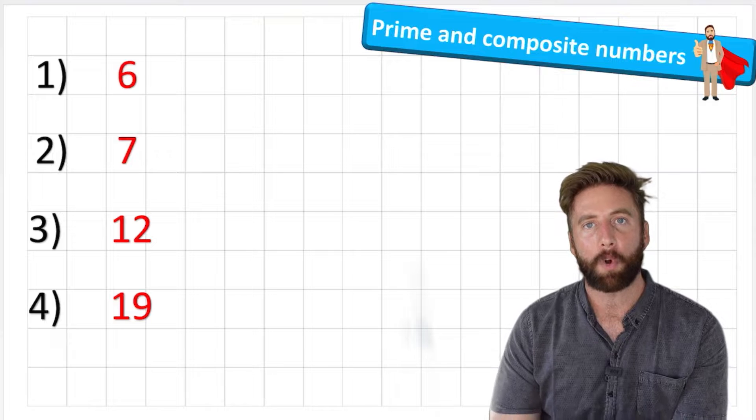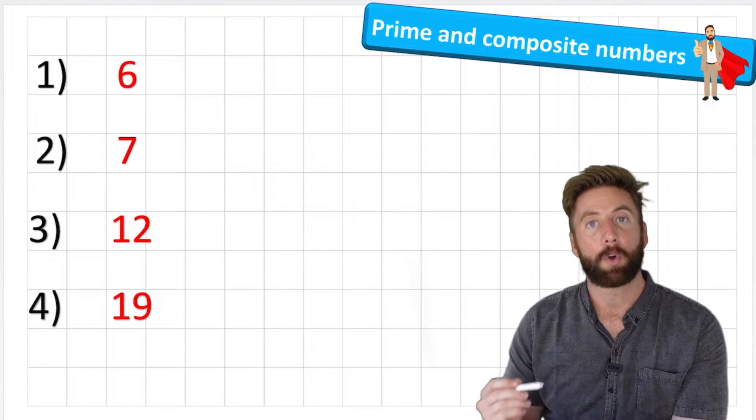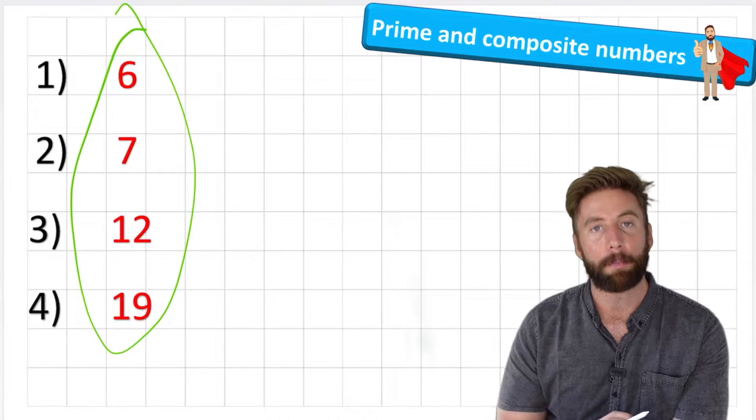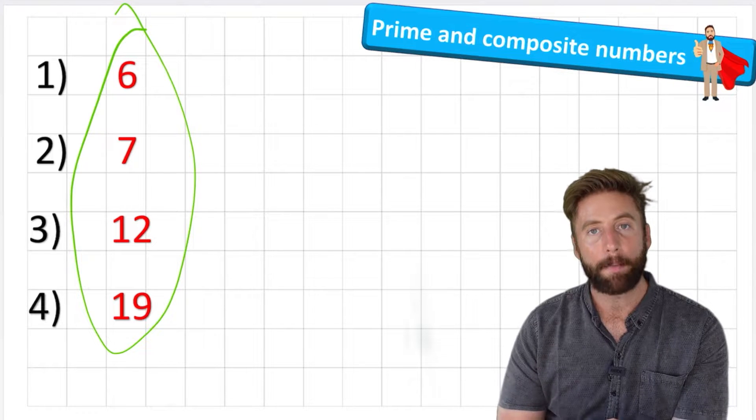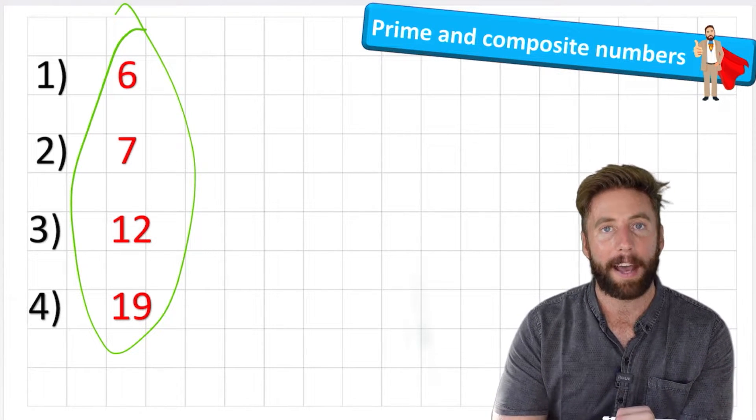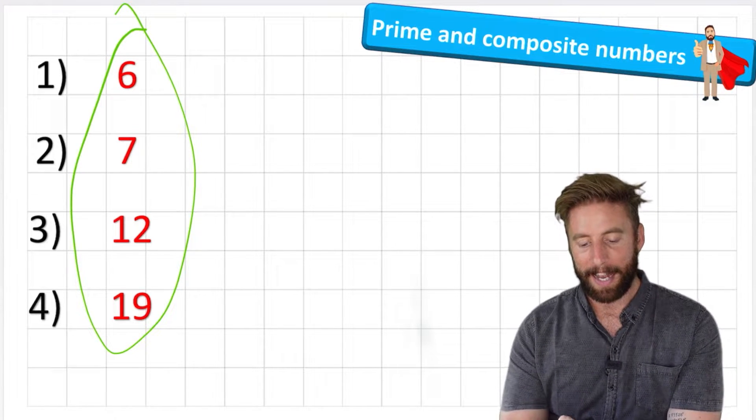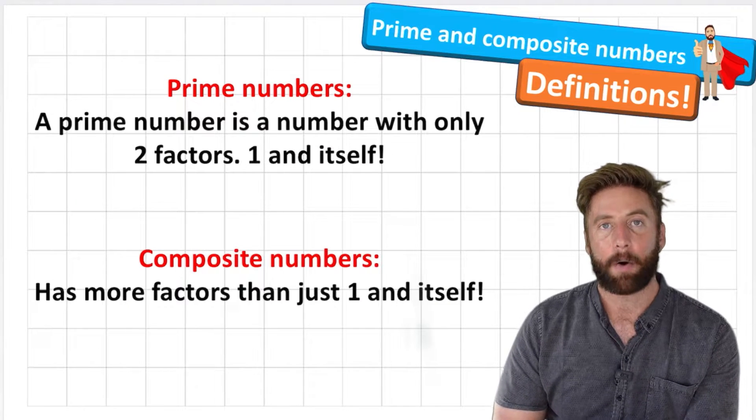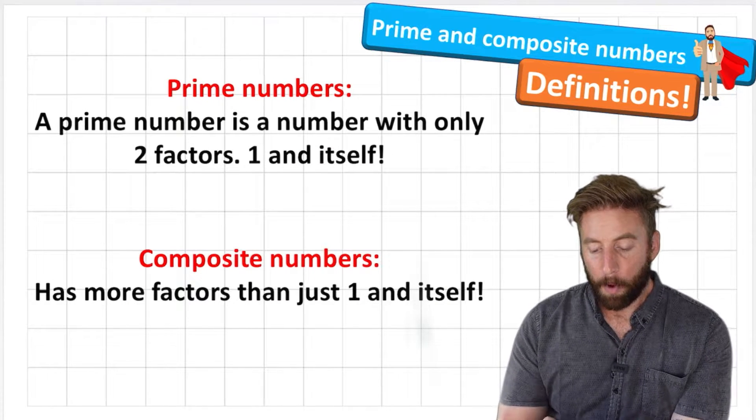Okay, so we're going to look at prime and composite numbers today and we're going to be looking at four example numbers and working out whether they are prime or composite and why. Okay, but before we can do that, let's have a look at our definitions.